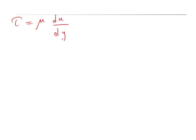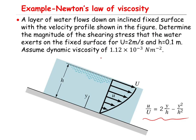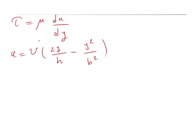You can solve this using Newton's law of viscosity: tau equals mu·du/dy. The velocity is given as u = U·(2y/h − y²/h²). We need to calculate du/dy, which equals U times the derivative of the first term — 2/h — minus the derivative of the second term — 2y/h².